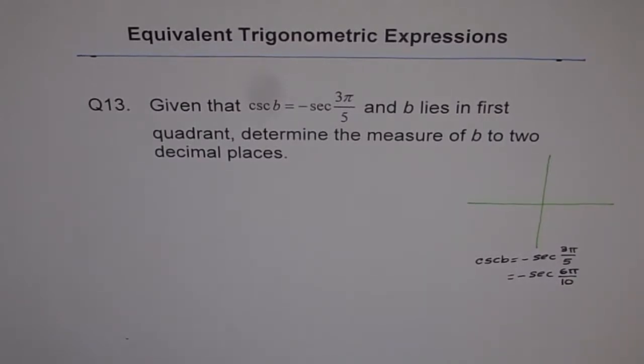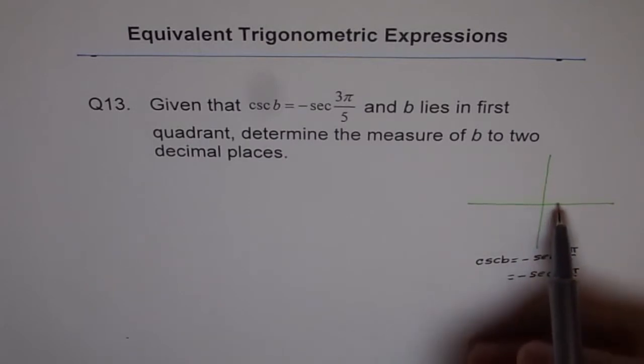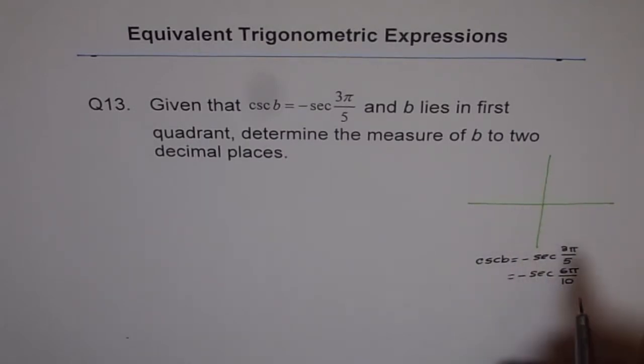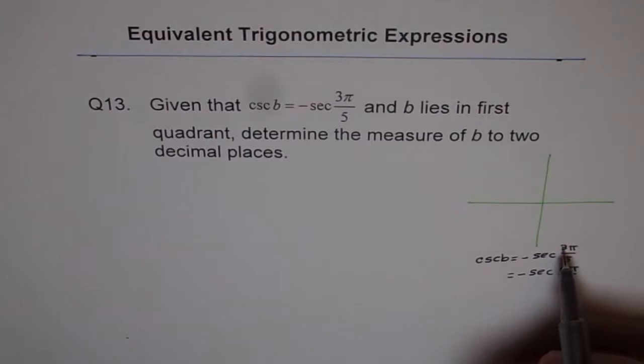It is the same thing, right. But that gives me flexibility. 6π/10 means that now we are dividing it into 10 parts and picking up the sixth one. 3π/5 was dividing it into 5 parts, picking up the third one.